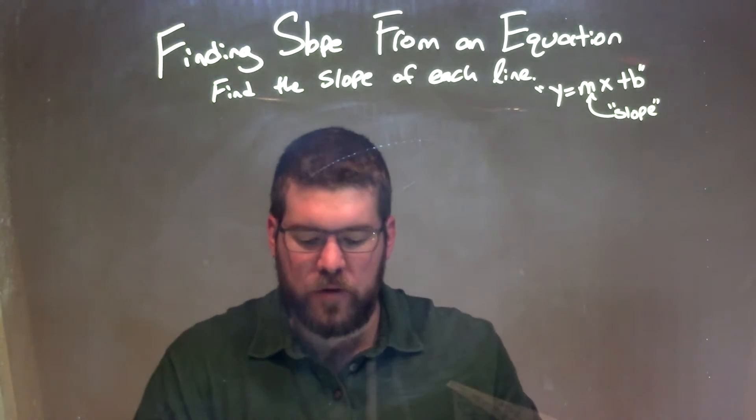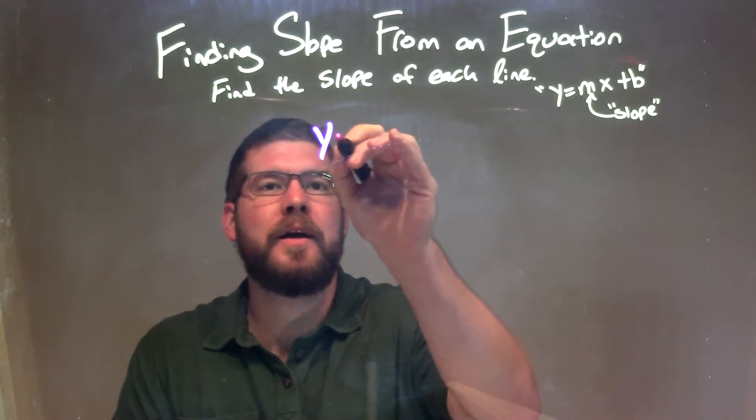We're going to find the slope of each line. So if I was given this equation, y equals negative 1.